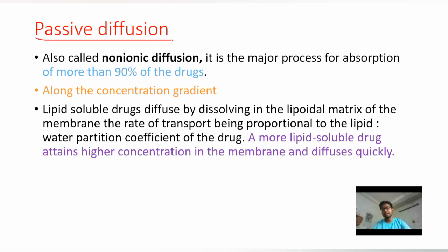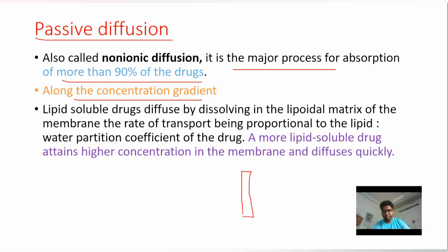Passive diffusion is the major process of absorption — more than 90% of drugs are absorbed by this process. It occurs along the concentration gradient. Here, the concentration of drug molecules on one side of the cell membrane is high, and the concentration inside the cell is low. Due to this concentration gradient, drug molecules pass through the cell membrane.